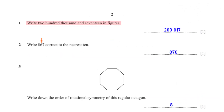Write two hundred thousand and seventeen in figures. Here is the number written in figures. You can type 200,000 plus 17 into your calculator to confirm.